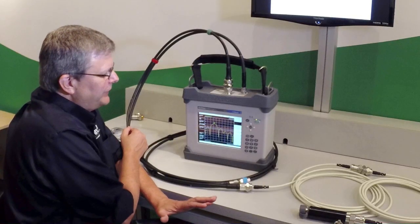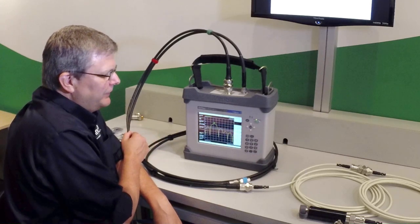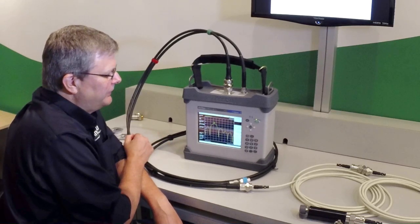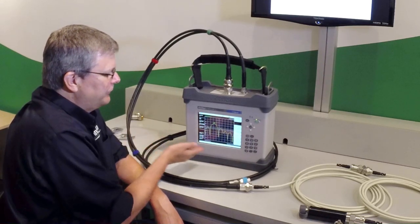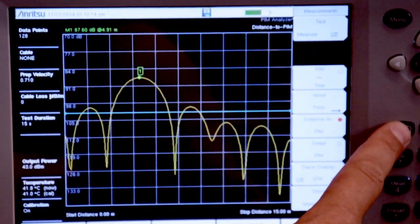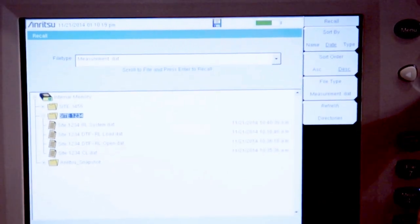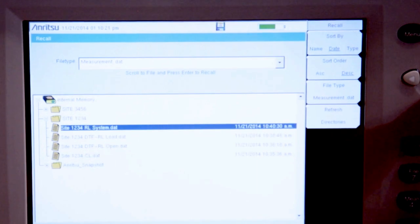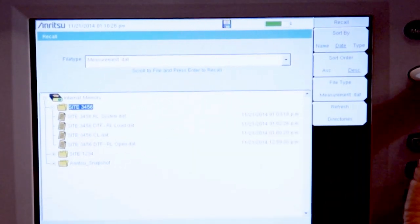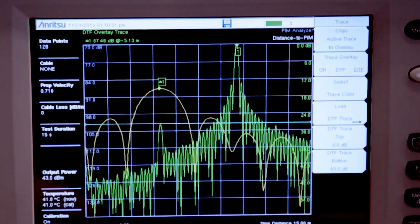A new capability of the B series PIM master is that because we did our cable antenna analyzer measurements on the same instrument, we can use those DTF measurements we did in cable and antenna analyzer mode to help us gain more information about the location of this PIM problem. So what I'm going to do is hit shift trace, load a distance to fault trace, and we're going to go into the site directory that we were looking at. The first one I'm going to load is the distance to fault measurement where we had the open circuit at the end.